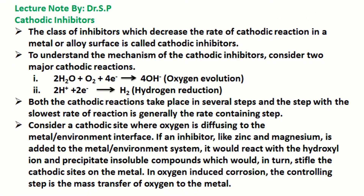In this tutorial we will discuss types of inhibitors. Let's start with cathodic inhibitors — the class of inhibitors which decrease the rate of cathodic reaction on a metal or alloy surface. To understand the mechanism of cathodic inhibitors, consider two major cathodic reactions.